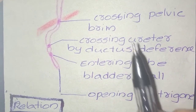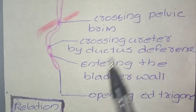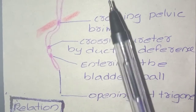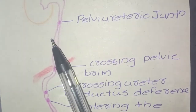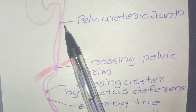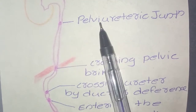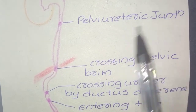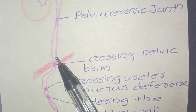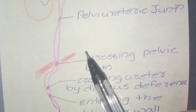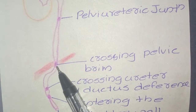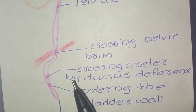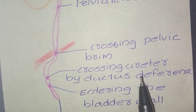Now for the constrictions of the ureter: the first constriction is at the pelvi-ureteric junction; the second constriction is at the brim of the lesser pelvis; and the third constriction is formed by the crossing of the ductus deferens over the ureter.